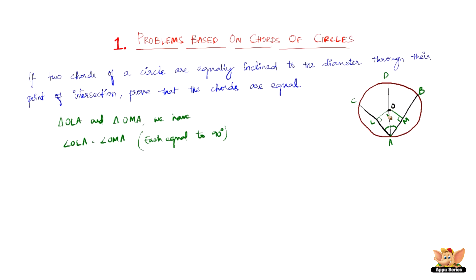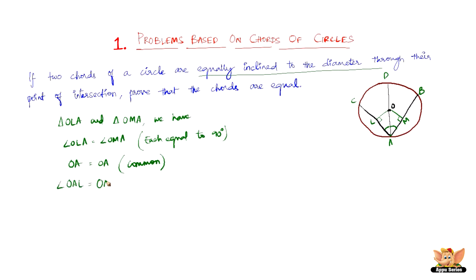OA is equal to OA because it is the same side shared by both triangles — common to both. Finally, angle OAL equals angle OAM, because it is given in the question that the chords are equally inclined to the diameter.